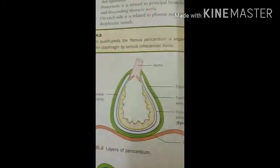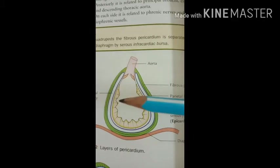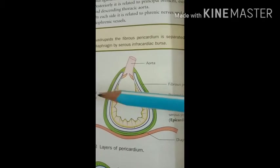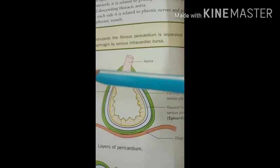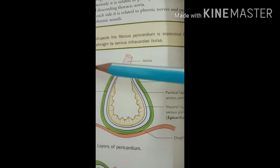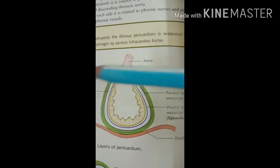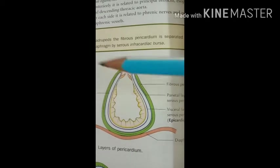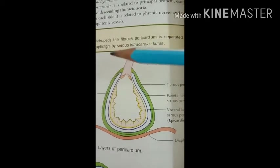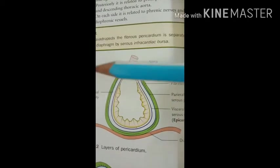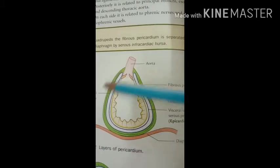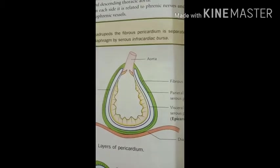The fibrous pericardium encloses the heart and fuses with the vessels which enter or leave the heart. The heart is situated within both the fibrous and serous pericardium. On the outer side is the fibrous pericardium and on the inner side is the serous pericardium.